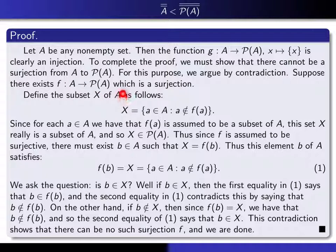So here's the one that is going to work. We define X to be the set of a in A, such that a is not an element of f of a. So first of all, notice that that makes sense, because if a is an element of A, then f of a is a subset of A, and so we can ask the question of whether or not a is an element of that subset of A. If it's not, then we throw it in the set X, and if it is, then we don't throw it in the subset X.